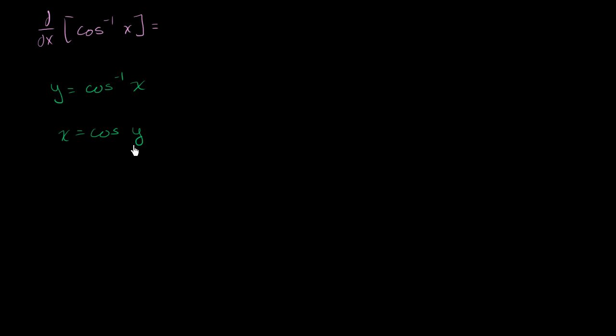Now let's take the derivative of both sides with respect to x. On the left-hand side, you're just going to have a 1. And on the right-hand side, you're going to have the derivative of cosine y with respect to y, which is negative sine of y, times the derivative of y with respect to x, which is dy/dx.